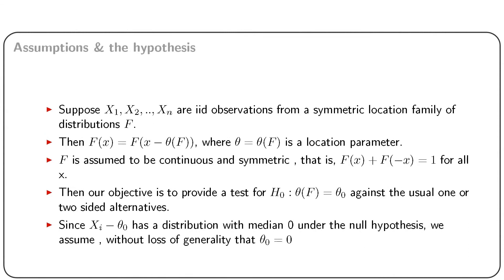For the development of Wilcoxon signed rank test, we need to define a few basic things. Suppose x1, x2, ..., xn are iid observations from a symmetric location family of distributions f. Then f(x) equals f(x minus theta), where theta is the location parameter. It is also assumed that f is continuous and symmetric. Recall that symmetry implies a symmetric density and probability content above and below the point of symmetry are the same.